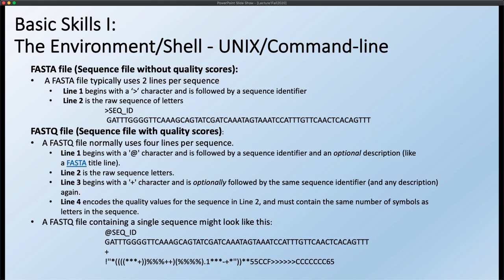There are two sequencing files: one is called a FASTA sequencing file and the other is called a FASTQ sequencing file. A FASTA file has two lines per sequence — the first line starts with a greater-than sign followed by a sequence identifier, and the next line is the raw DNA sequence letters. A FASTQ file has four lines: the identifier preceded by an at sign, the sequence letters, a plus sign, and then symbols representing the quality score for each base call.